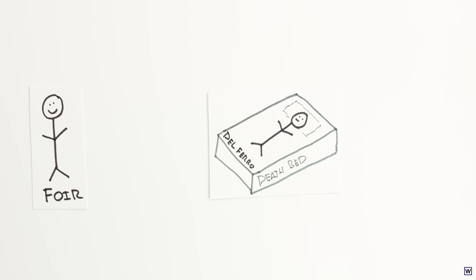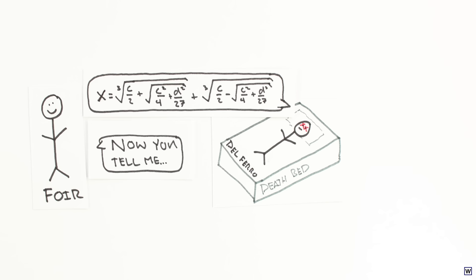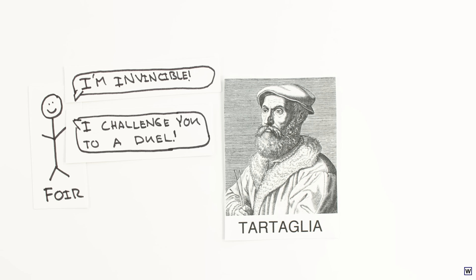What happens next is a bit of a long story. Here's the quick version. Del Ferro kept his formula secret until he was on his deathbed when he finally told his student, Antonio Foer. Foer immediately thought he was invincible, or at least invincible in a math duel, and challenged a way more skilled mathematician, Fontana and Tartaglia, to a duel.